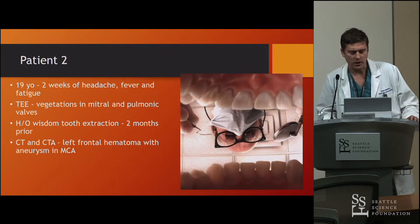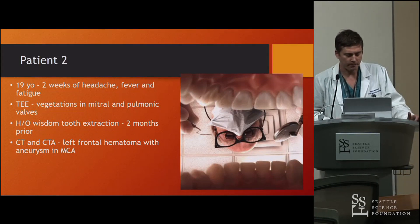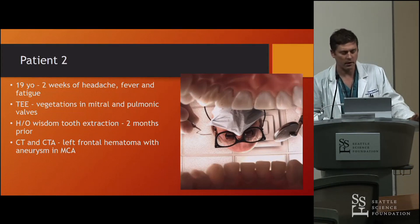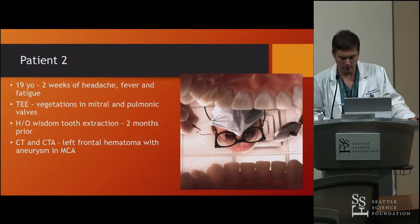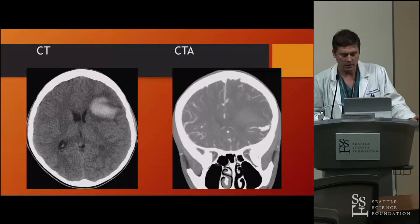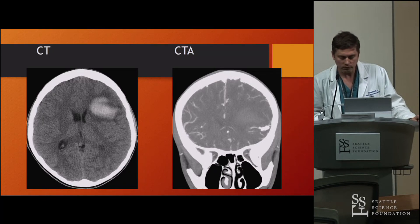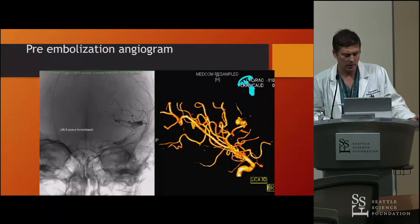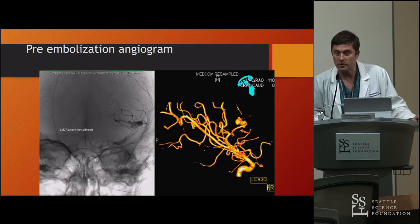Another case is a 19-year-old who had some wisdom teeth done, had some vegetations, and then had a CT scan which showed this hemorrhage. And then this CT angiogram shows this pretty nasty mycotic aneurysm of the middle cerebral artery, and that's what it looks like on angio.